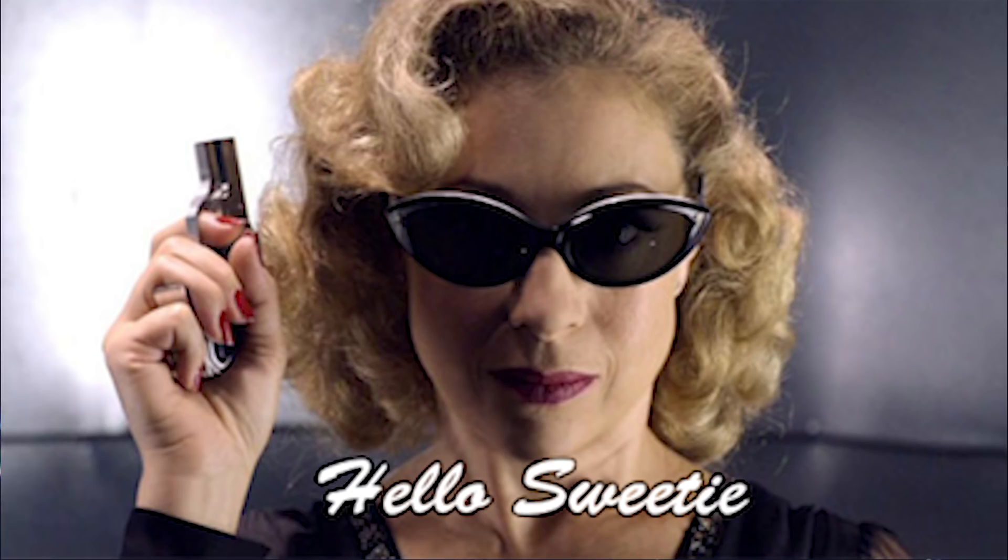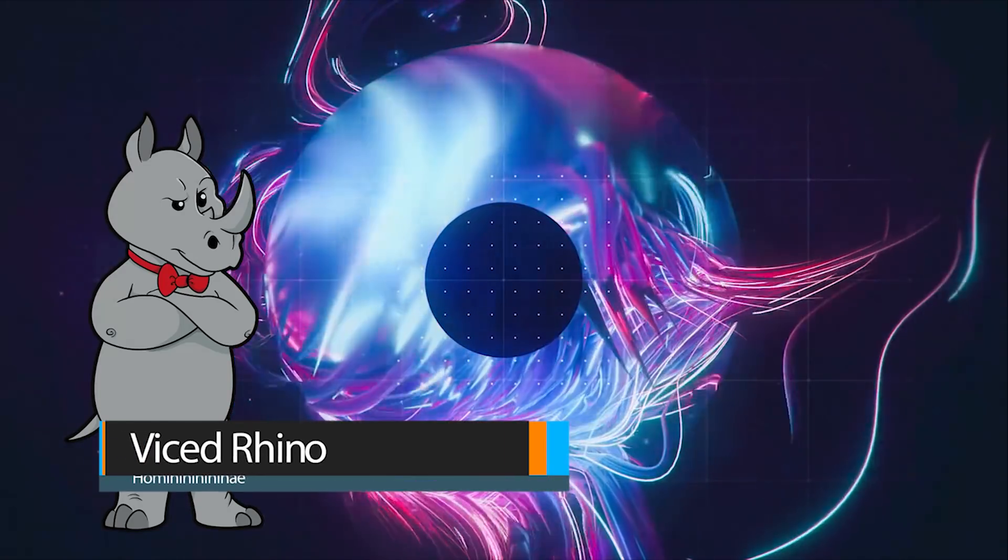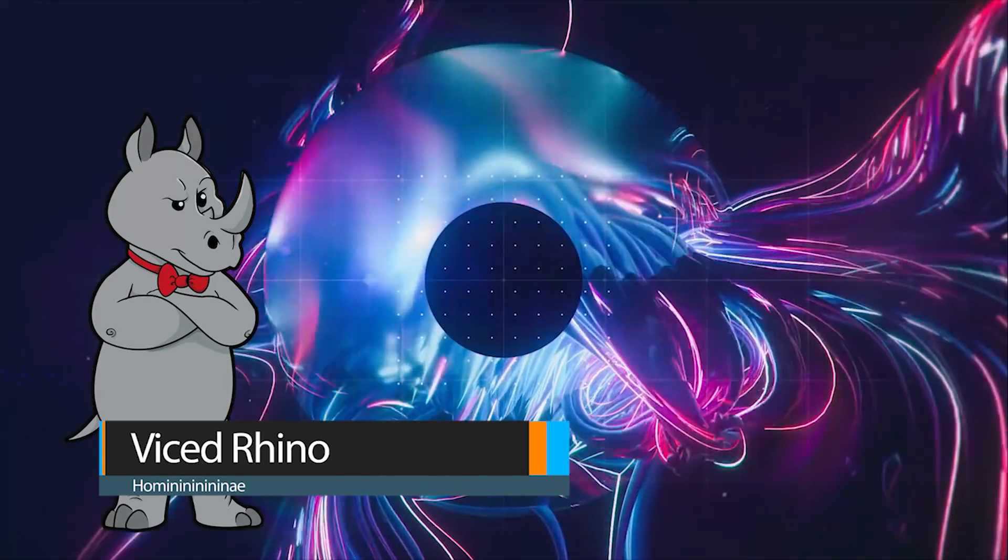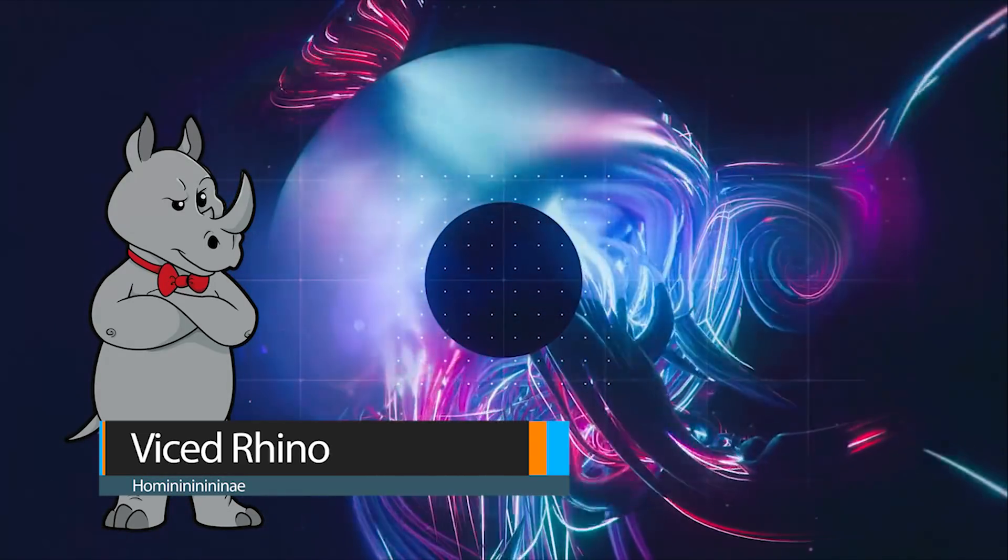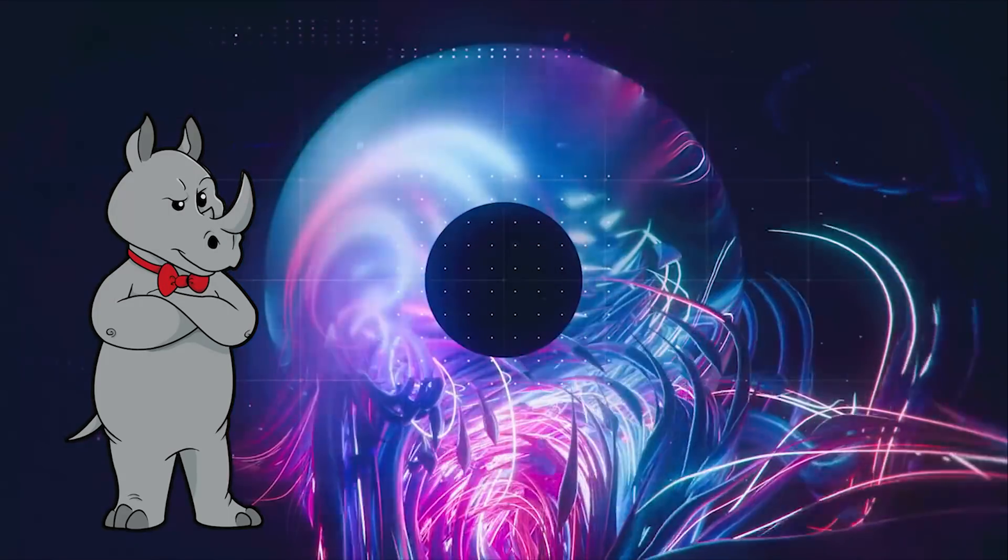Hello, and welcome to my channel. Vice Rhino here. Today's line of evidence for evolution is phylogeny, which, simply put, is the grouping of organisms together by their relationship into a family tree